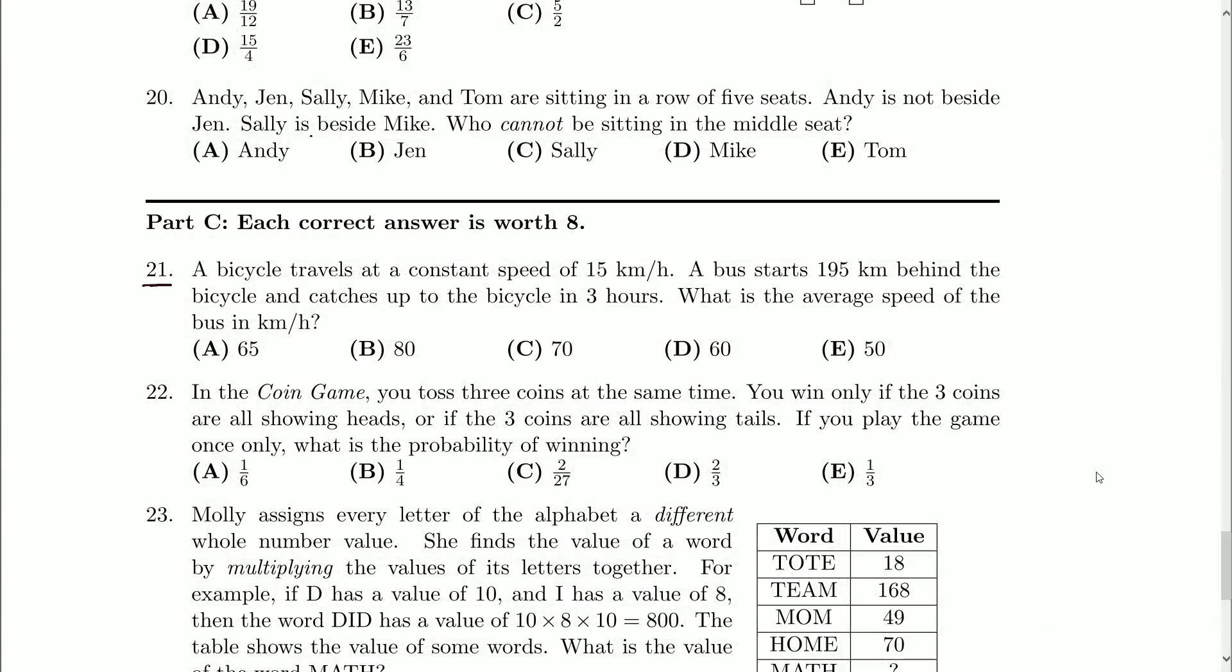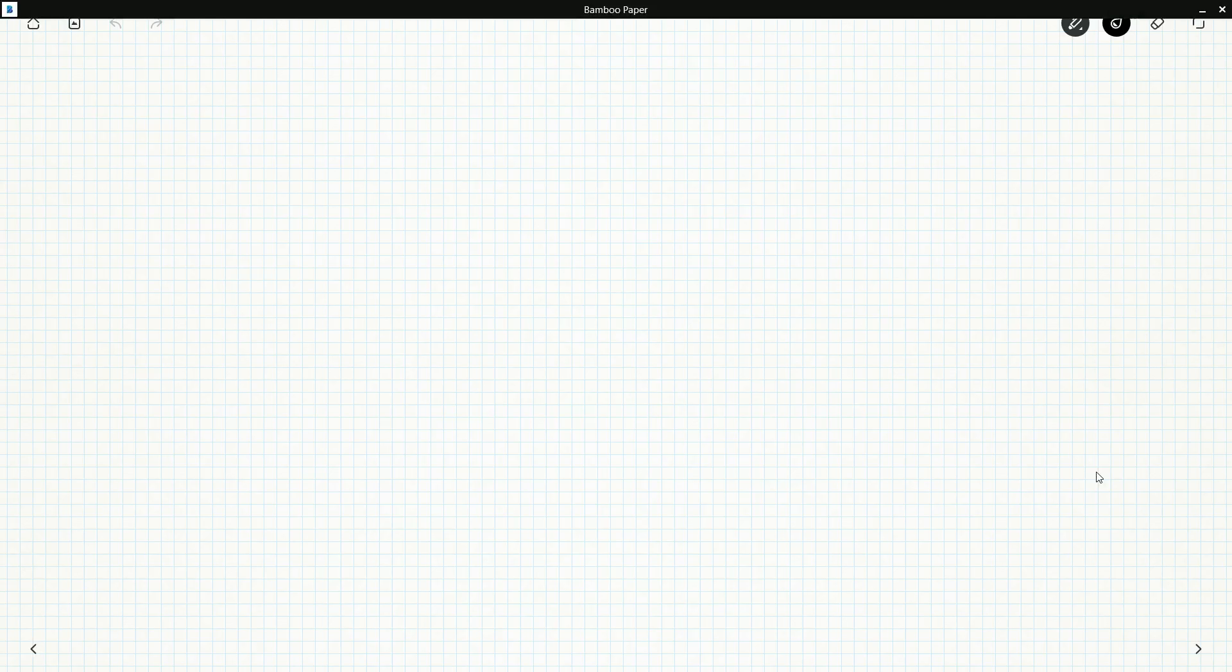A bicycle travels at a constant rate of 15 kilometers per hour. A bus starts 195 kilometers behind the bicycle and catches up to the bicycle in three hours. What is the average speed of the bus in kilometers per hour?